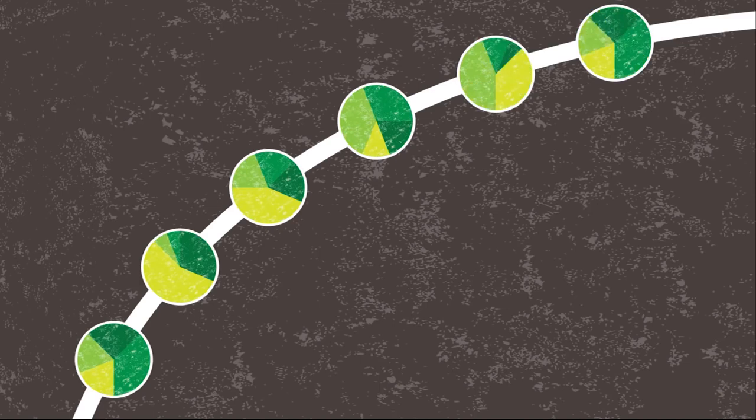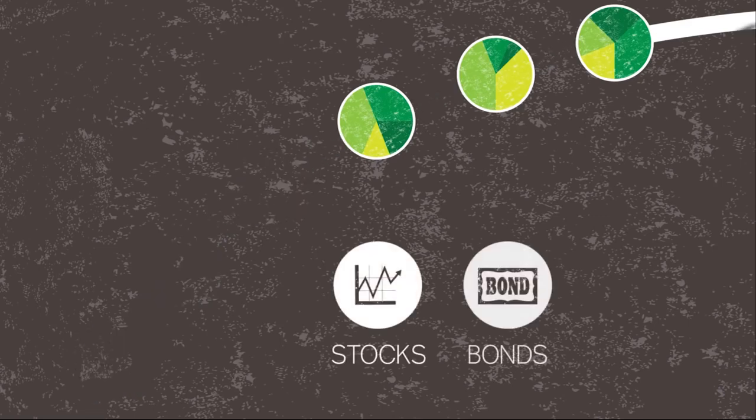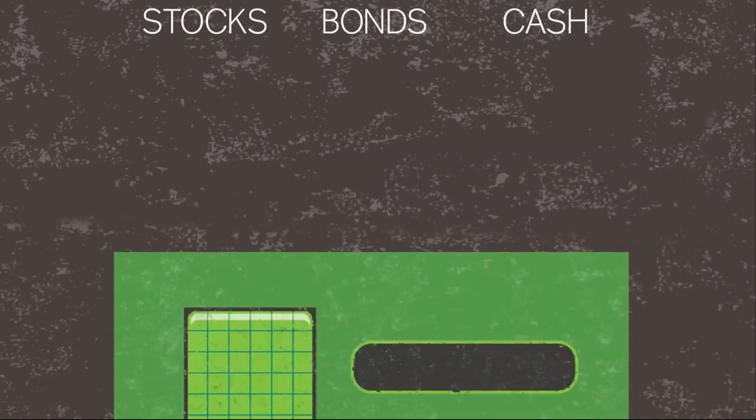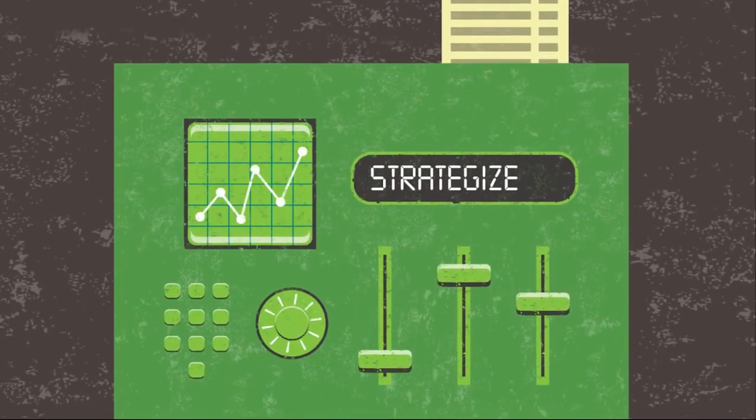Guided Choice can give you personalized advice recommending a specific mix of stocks, bonds, and cash to reach your retirement income goal. You can even use it to try different strategies and project the results.